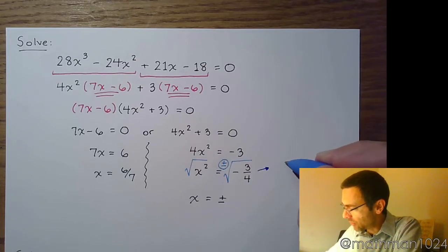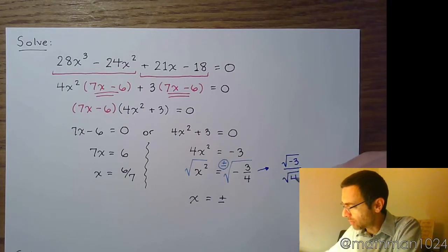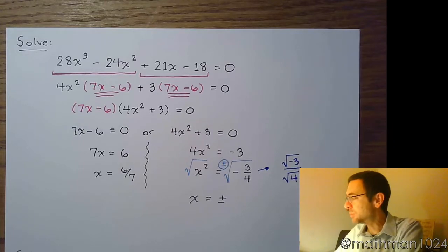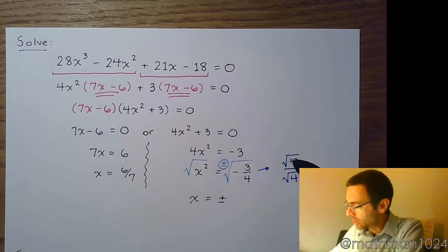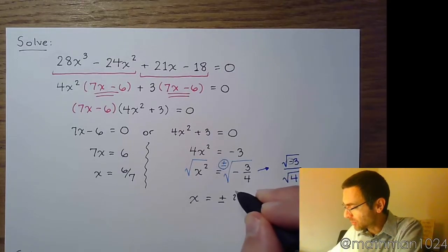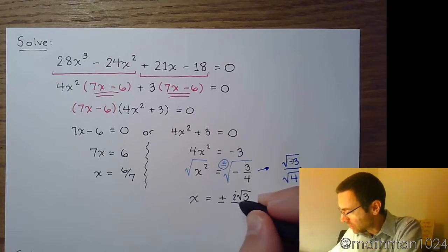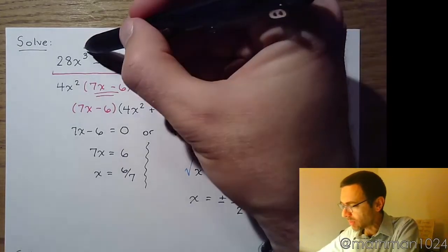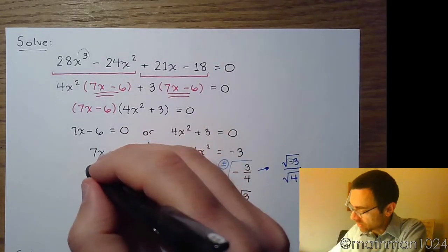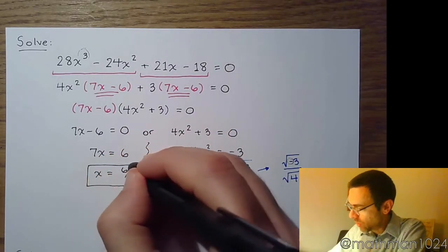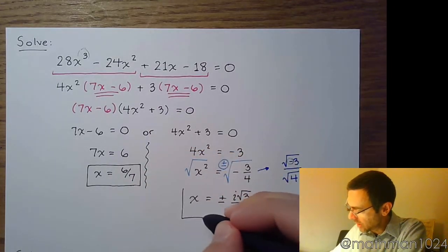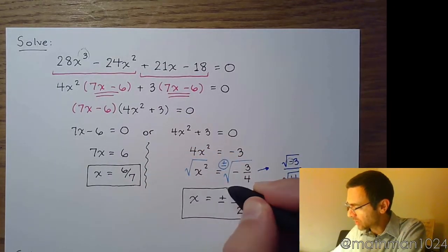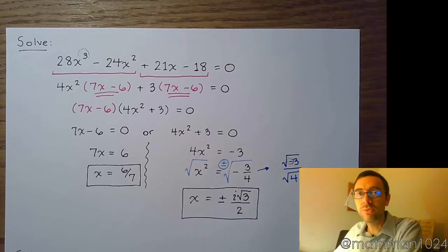The radical can be rewritten as the square root of negative 3 over the square root of 4. In the numerator, take out the negative as an i, so this becomes i times the square root of 3, and the square root of 4 is 2. Looking at the original equation, we have a degree of 3, so we're supposed to have three solutions. We have one real solution and two complex solutions — a total of three solutions in this problem.